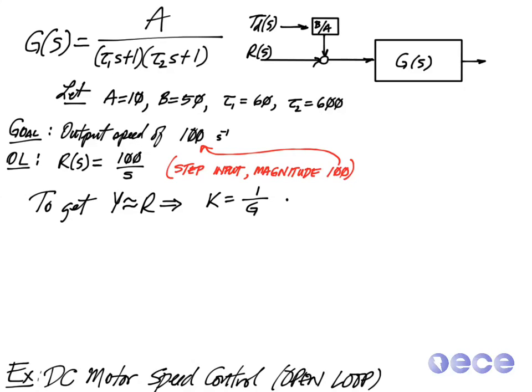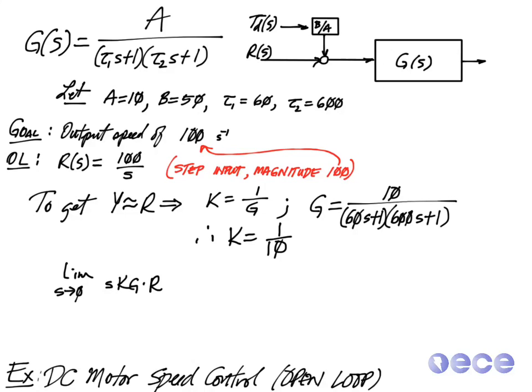So if I want Y to approximately equal R, I'm going to choose again K equal to 1 over G. Therefore, K equals 1 over 10.